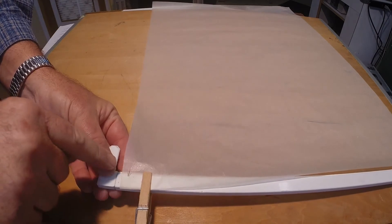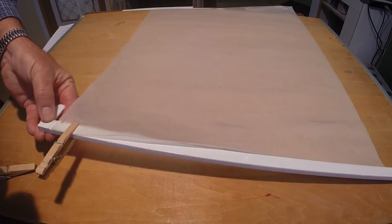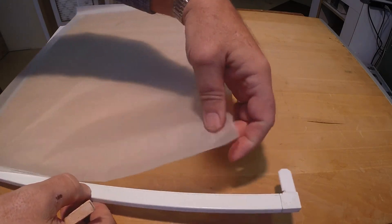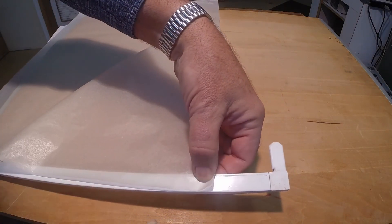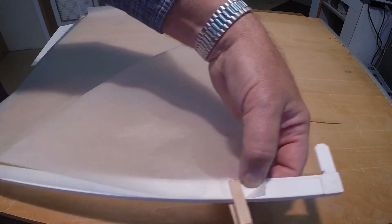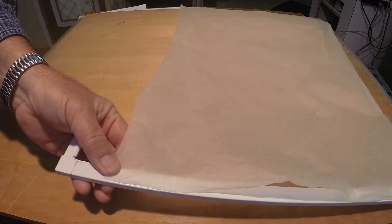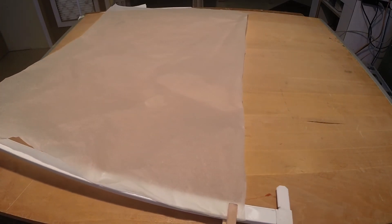Clip the sheet of tissue to a rod or stick with the grain in a vertical orientation. Do not pull the tissue tight between the clips. Spray the tissue with water and allow it to dry. Once the tissue is dry, carefully remove the clips and place the tissue where it will not get damaged.